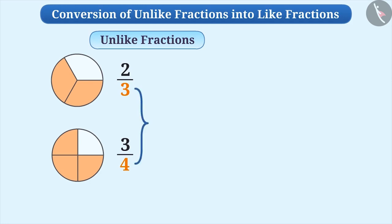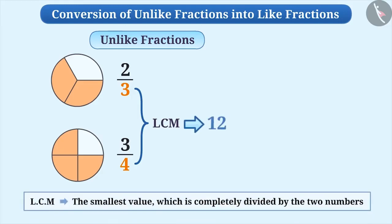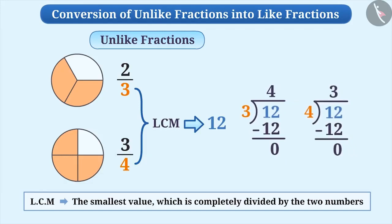To convert them into like fractions, first, we calculate the LCM of the denominators of both fractions. The LCM of two numbers is the smallest value which is completely divided by the two numbers.